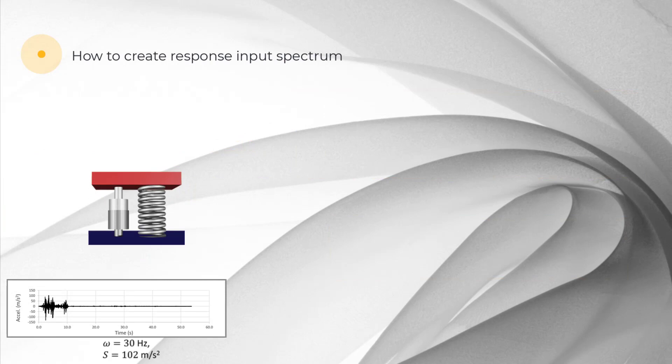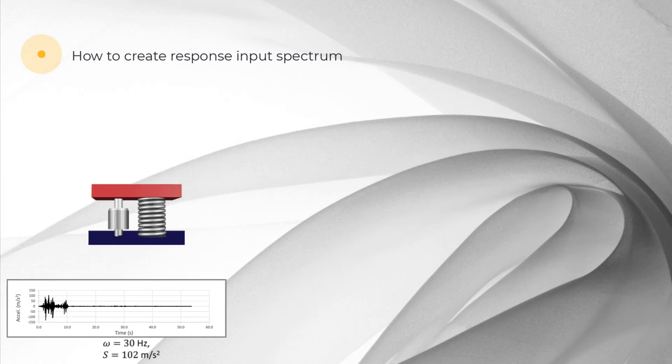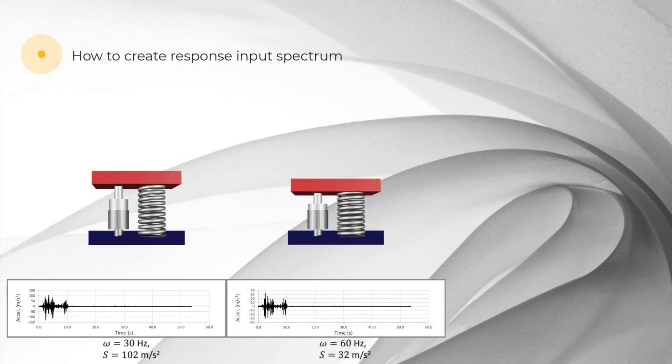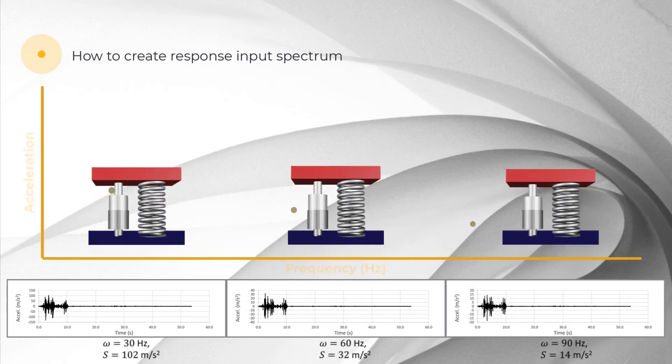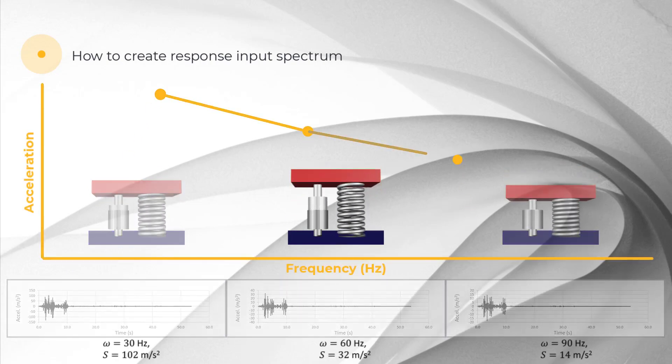If we repeat this process for many oscillators with different frequencies and plot maximum response over time as a function of frequency, we can get the response spectrum graph. Note that in this case damping is the same for each oscillator but damping can be different and additional spectra can be generated for other damping values.